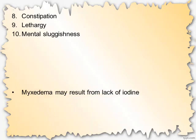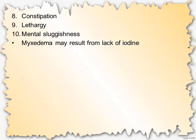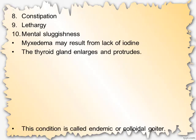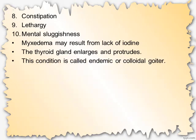In goiter, the thyroid gland enlarges and protrudes out. This condition is called endemic or colloidal goiter.